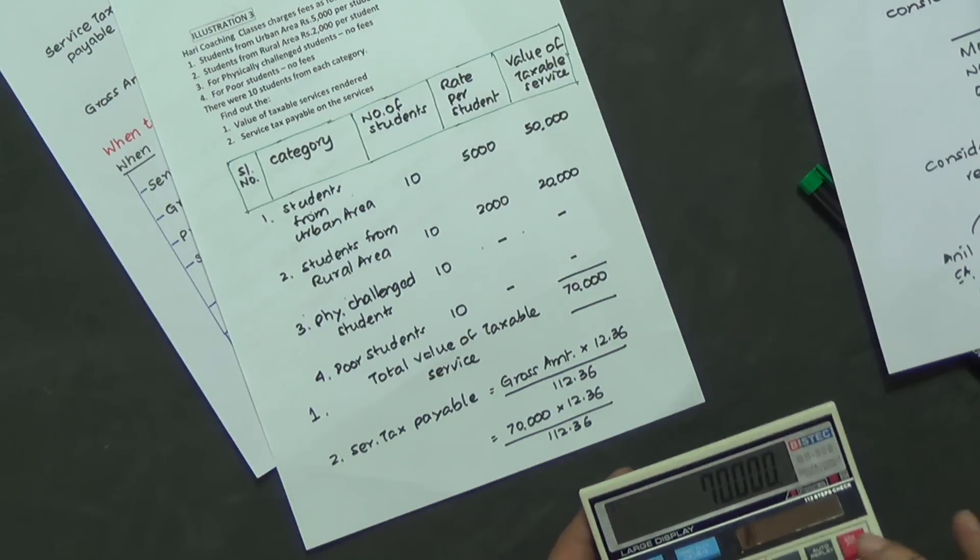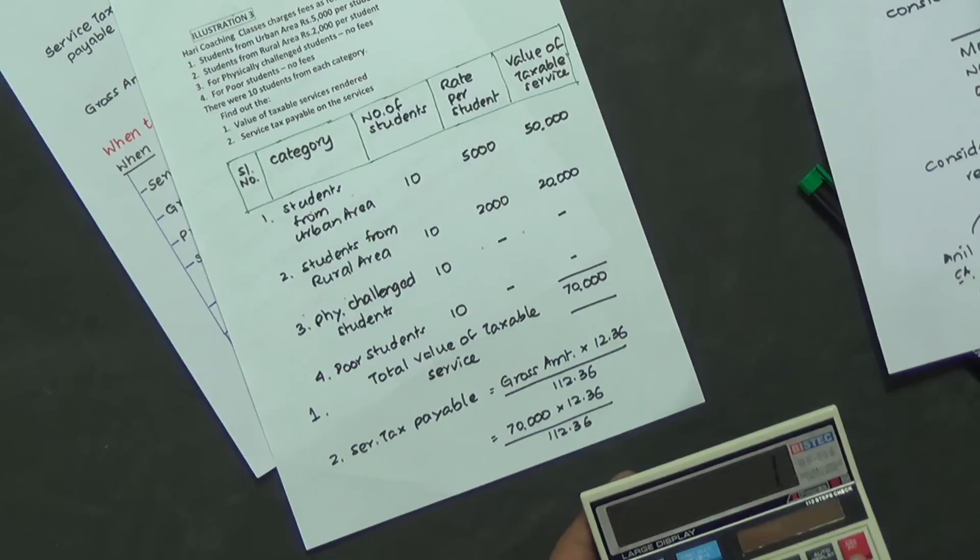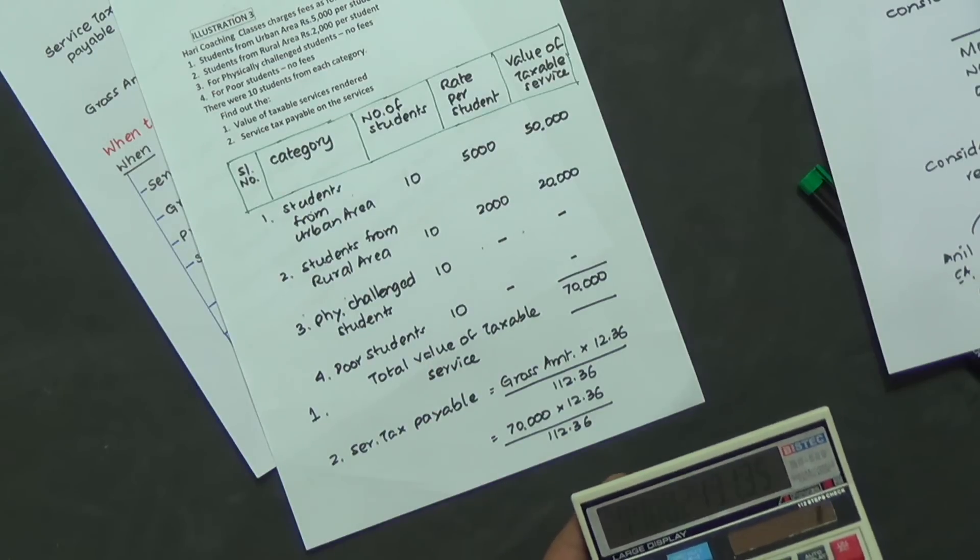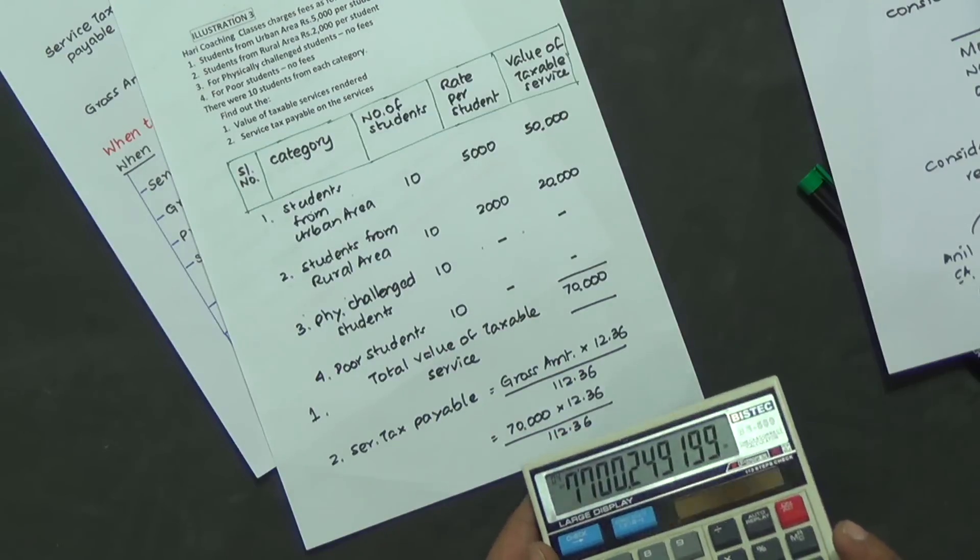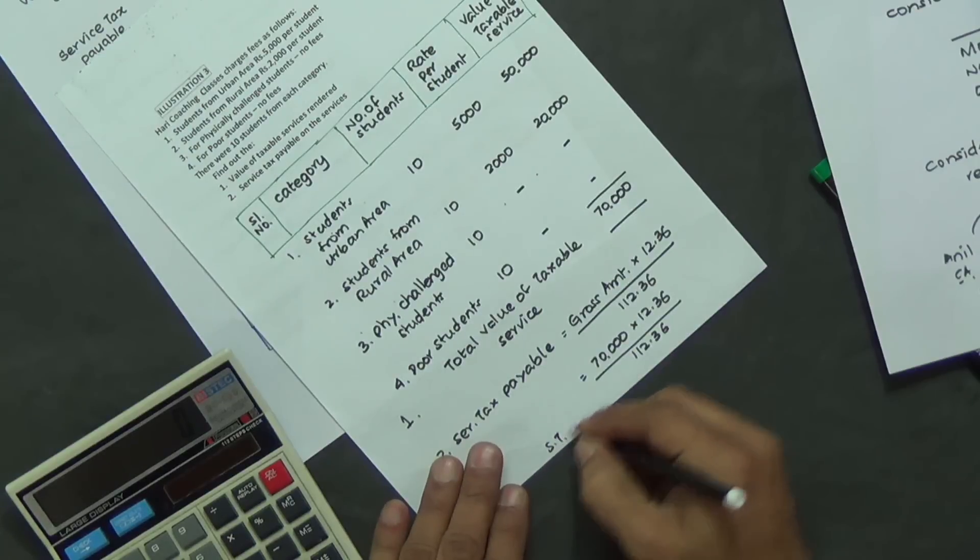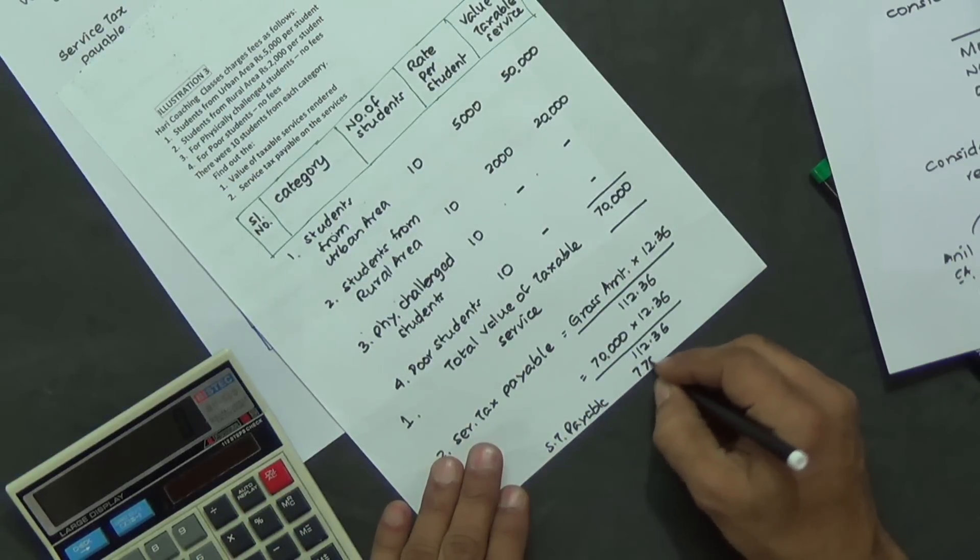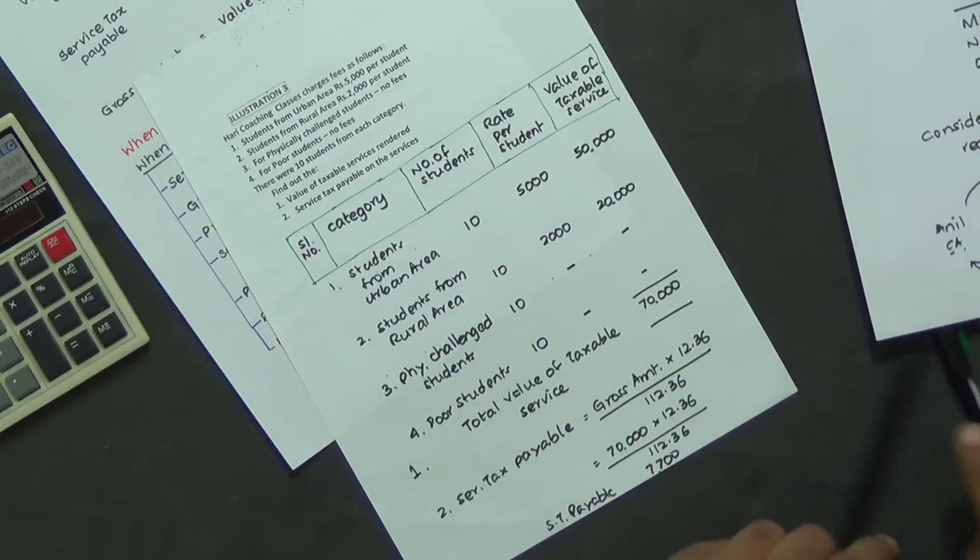7,700. Let me work this once again, into 12.36 divided by 112.36, 7,700. This is the value. So service tax payable is 7,700.